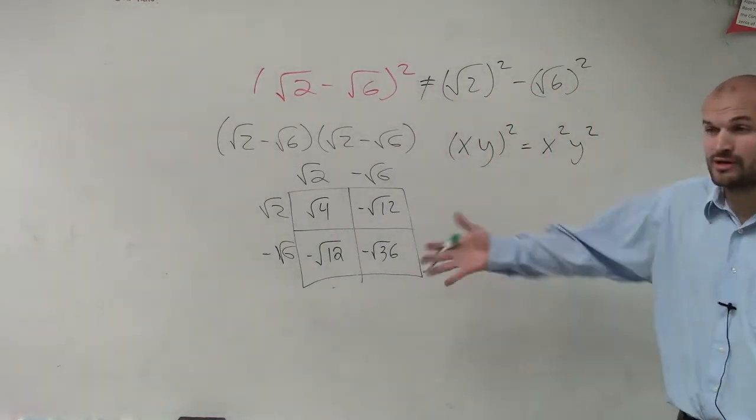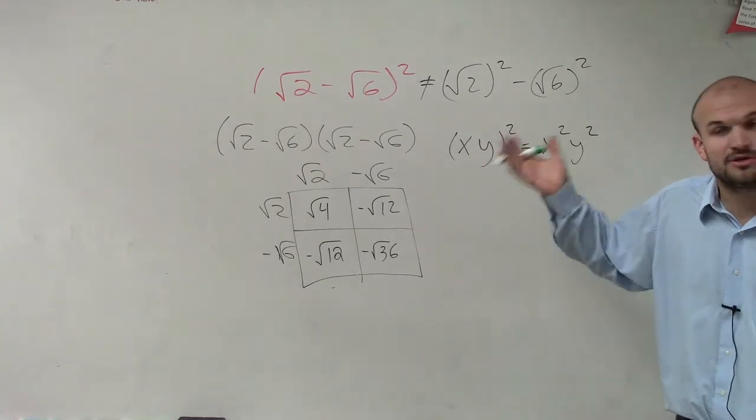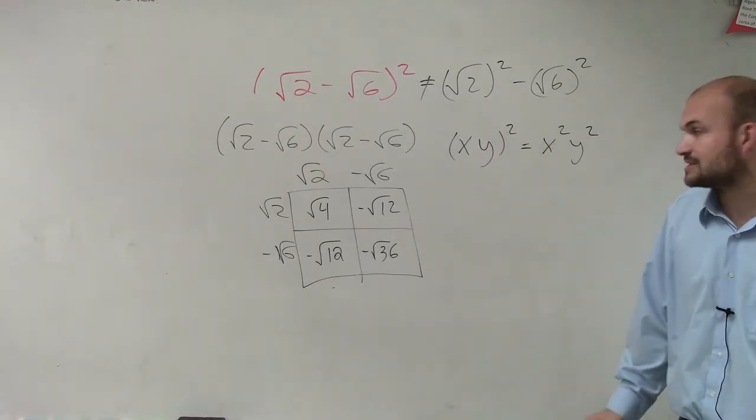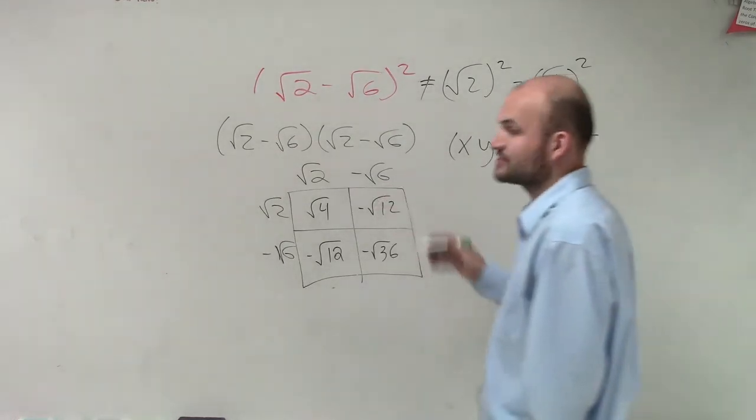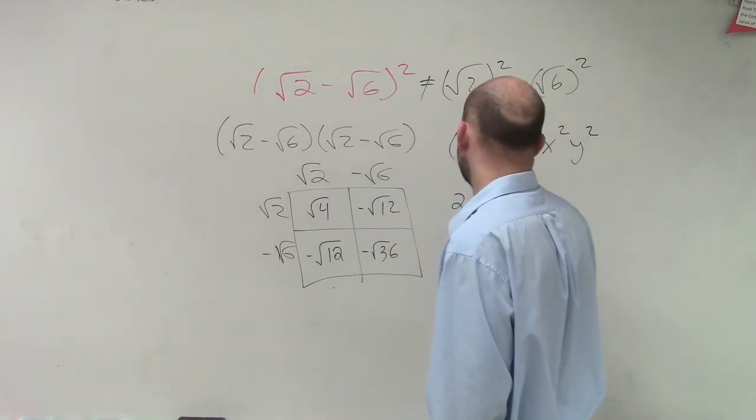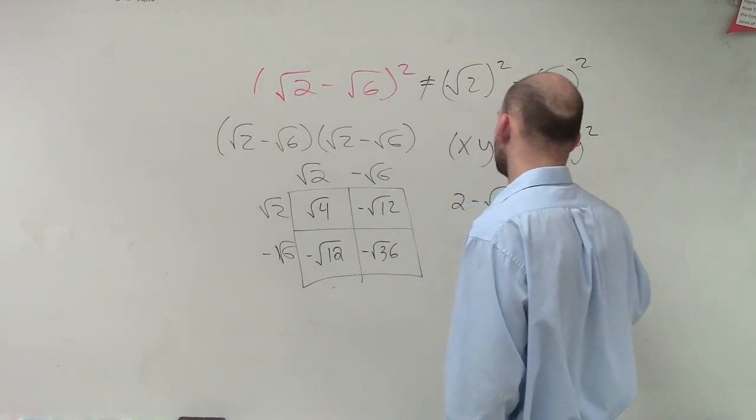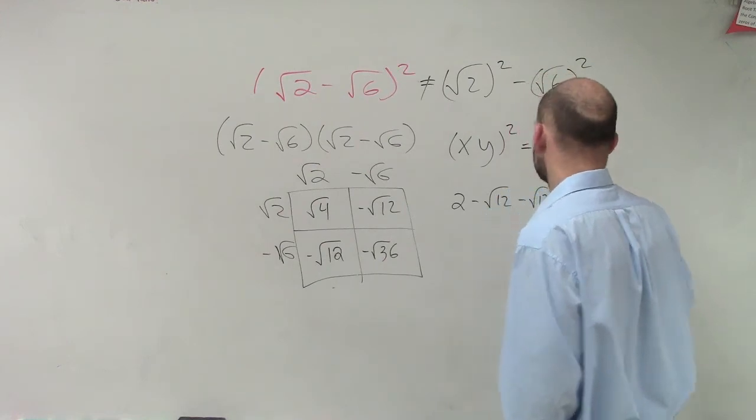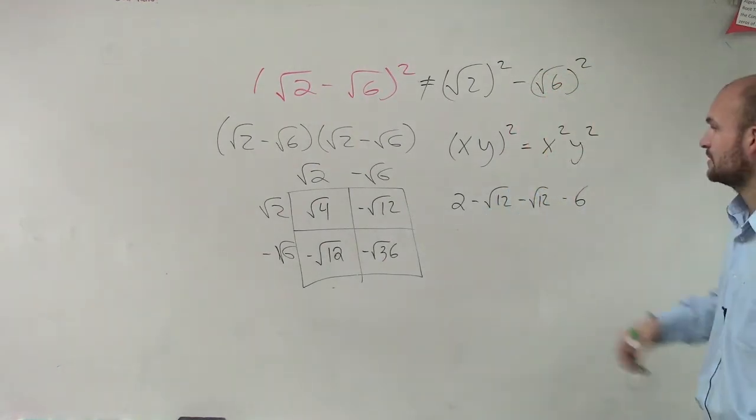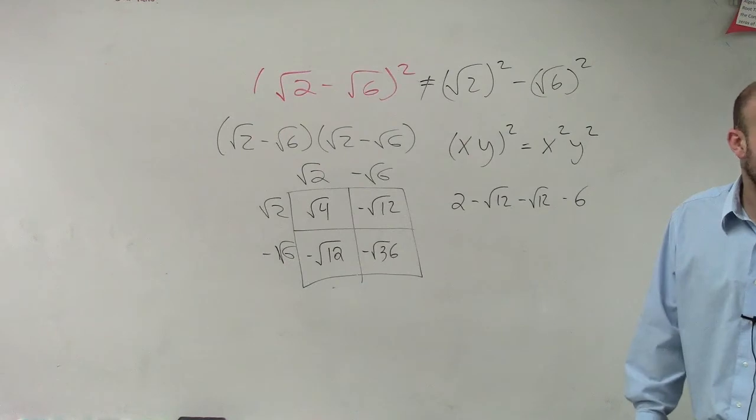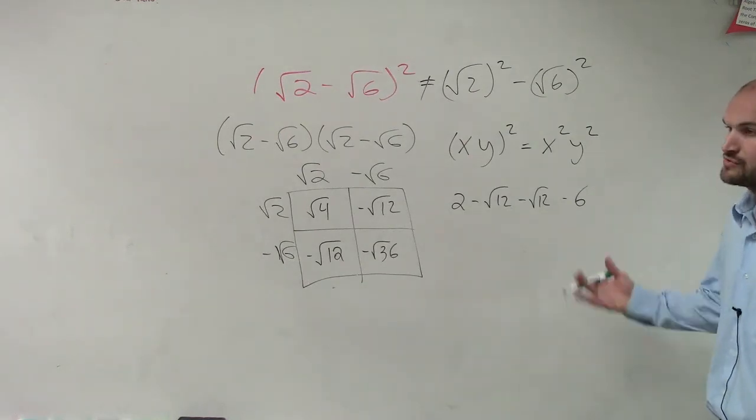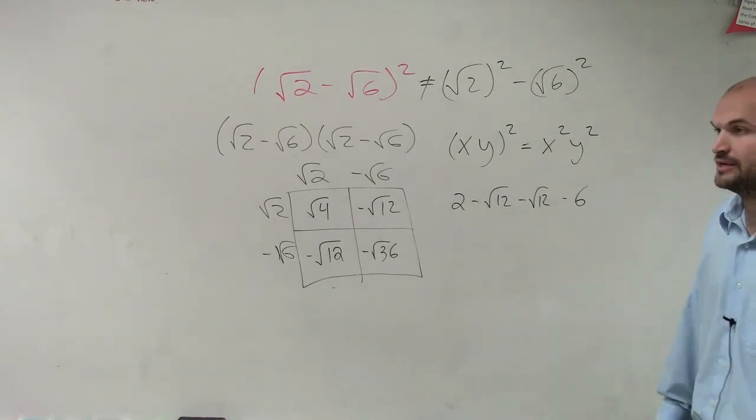Does everybody follow me what I did? Remember, you can multiply, you can't add them, but you can multiply radicals inside of each other. So therefore, obviously the square root of 4 is 2 minus the square root of 12 minus the square root of 12 minus 6, because the square root of 36 is 6. Then negative square root of 12 minus negative square root of 12 is going to be 2 square root of 12.